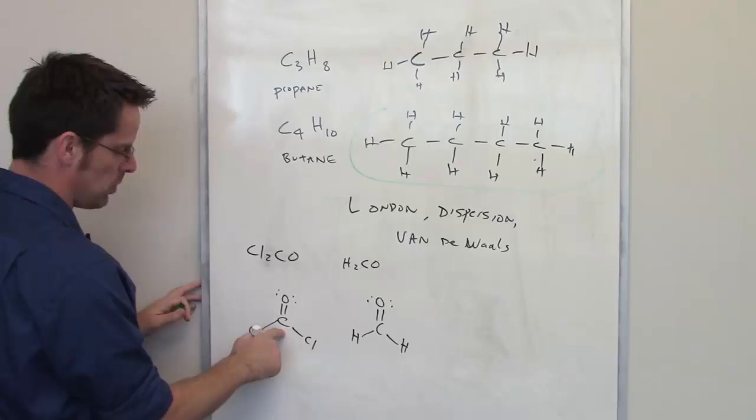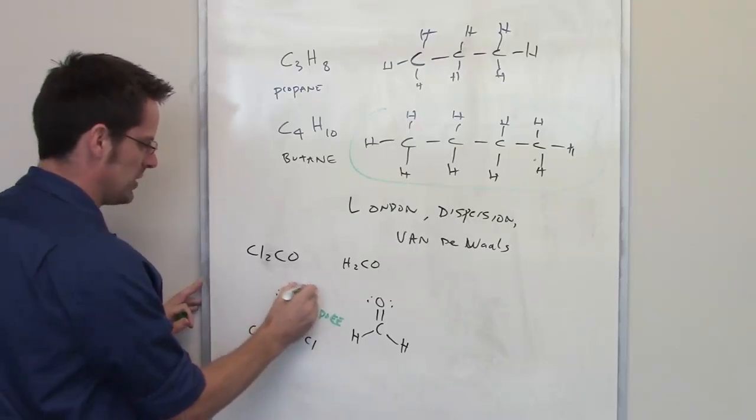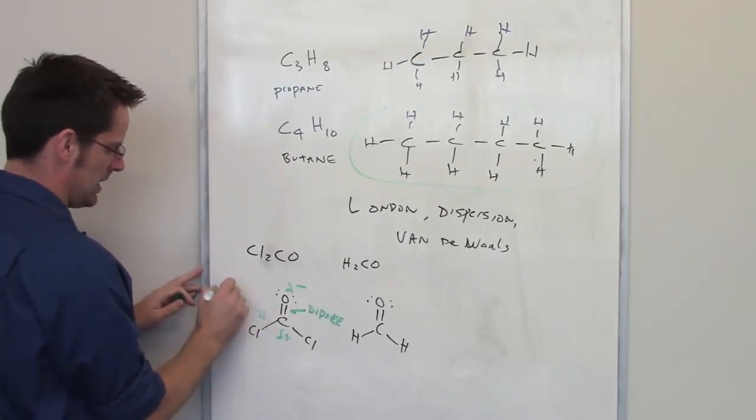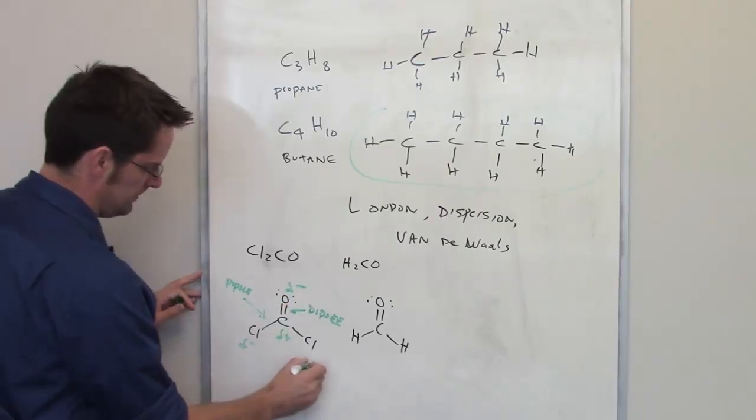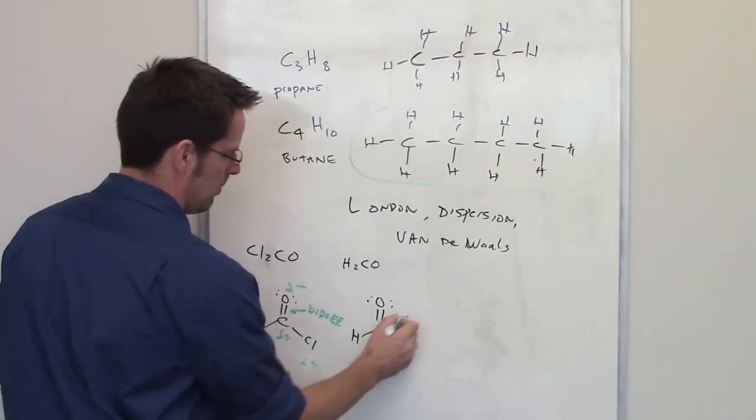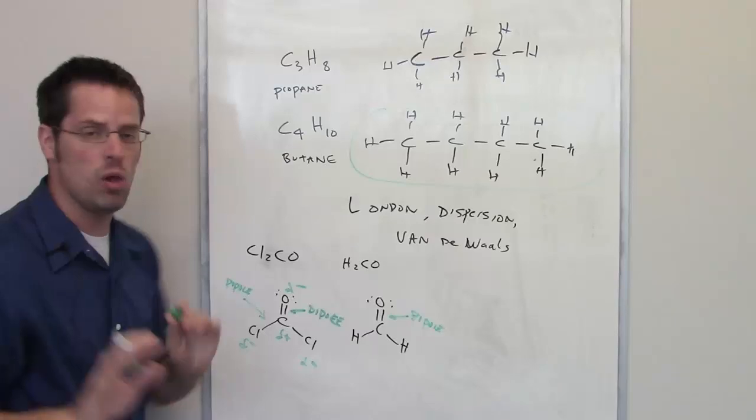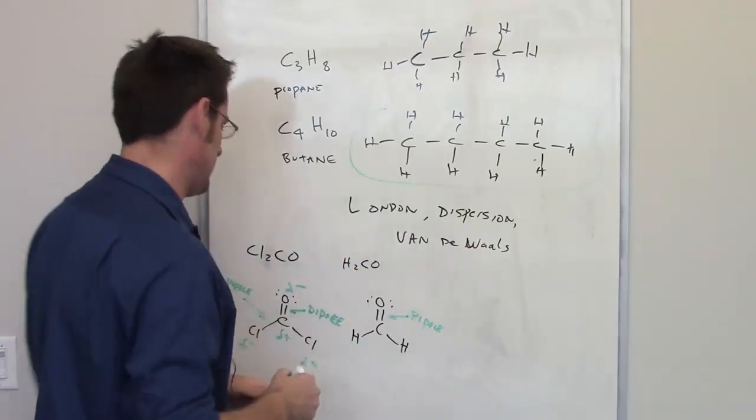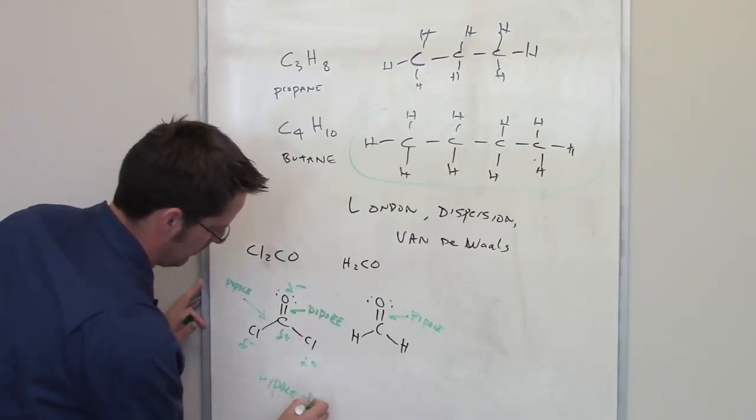You'll notice that oxygen is much more electronegative than carbon. Therefore, you have a dipole there. A relatively strong partial negative on the oxygen, a strong partial positive on the carbon. Similarly, chlorine is more electronegative than carbon. So once again, you also have dipoles here. So I'm going to have a partial negative on the chlorines. Over here, carbon and hydrogen are about the same, so there's not a strong dipole either way. Once again, between the carbon and the oxygen, however, I do have dipoles. So both of these molecules and all molecules, no matter what they are, have London forces by default. In addition to having London forces, each of these molecules is going to have dipole-dipole intermolecular attractions.